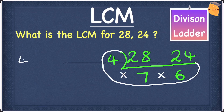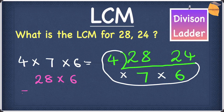So we'll have to do four times seven times six. Four times seven is twenty-eight, and then twenty-eight times six. To work this out: six times twenty gives 120, and six times eight gives forty-eight. Adding those two gives one hundred and sixty-eight. So the LCM for this question is one hundred and sixty-eight.